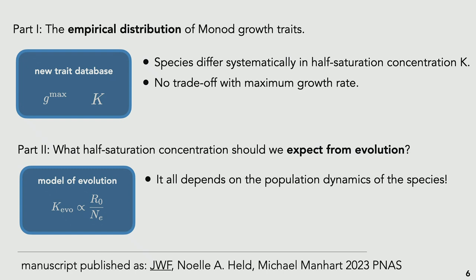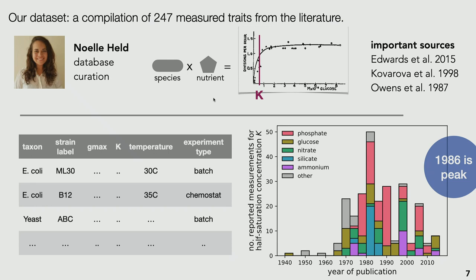Audience question: when you say trait database for g_max and K — this K is all over the place; how can you make sense of it, since K is extremely difficult to measure? Response: it's a database we collected from literature data. I think we can make sense of it. The goal is to resurrect the K measurements — to show there's actual signal in them, not all noise. That's the starting point: the collection of these trait measurements.